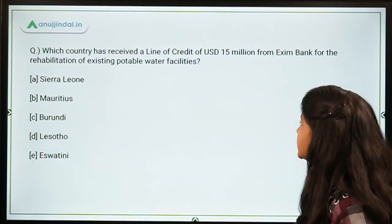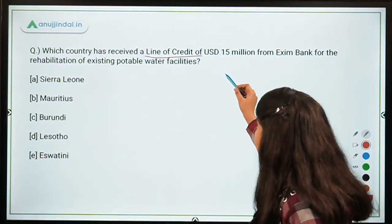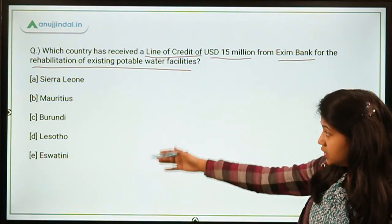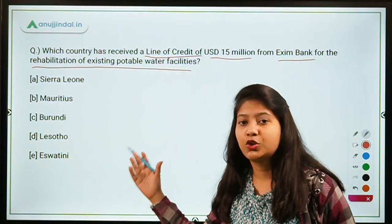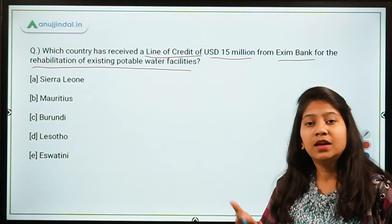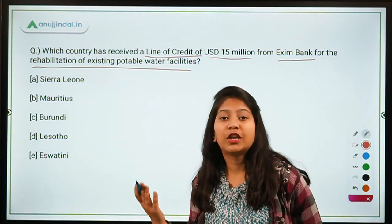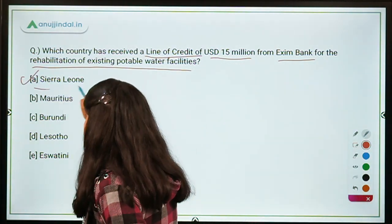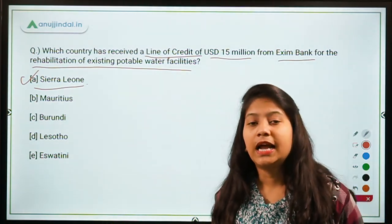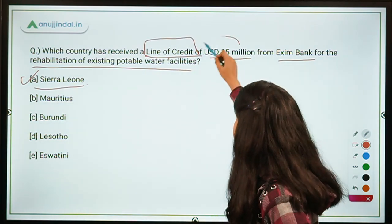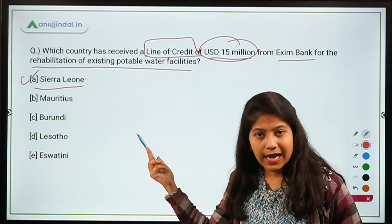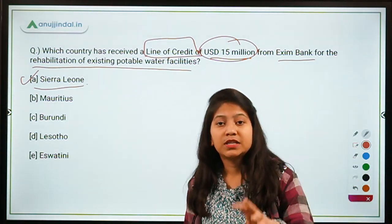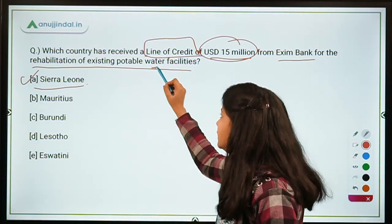Moving to the third question: which country has received a line of credit of USD 15 million from EXIM Bank for the rehabilitation of existing portable water facilities? The right answer is Sierra Leone, an African country. This line of credit will be provided to Indian companies working in Sierra Leone for the rehabilitation of portable water facilities.